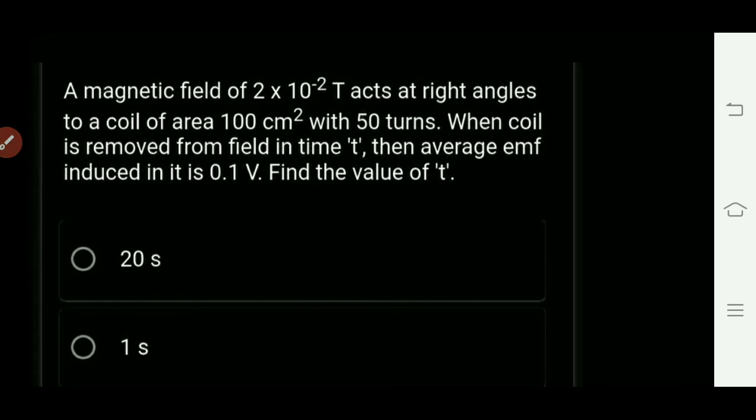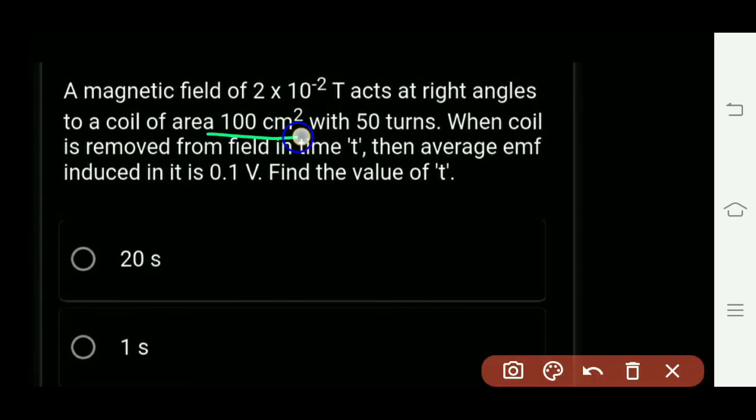A magnetic field of 2 × 10⁻² tesla acts at right angles to a coil of area 100 centimeters square. So the area given in centimeter square, that means 100 × 10⁻⁴ meters square. Okay, now 50 turns - the value of n is given, the value of B is already given, and the value...